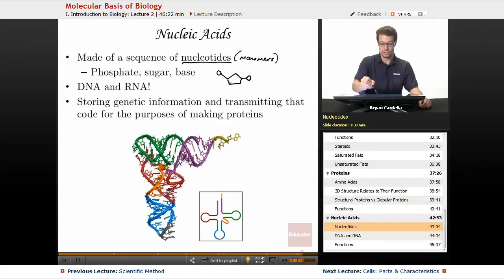The sugar, which if it's DNA, it's called deoxyribose. If it's RNA, it's called ribose. It's a five-sided pentose sugar. And then a base.